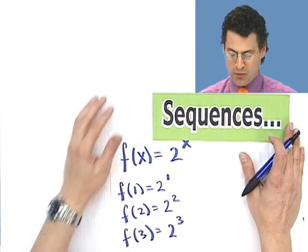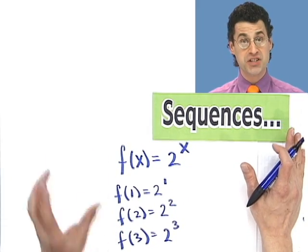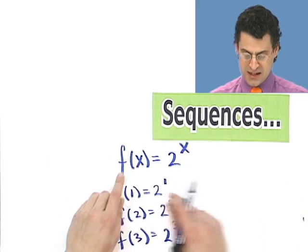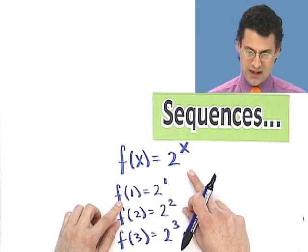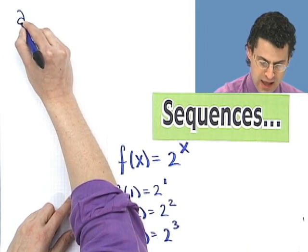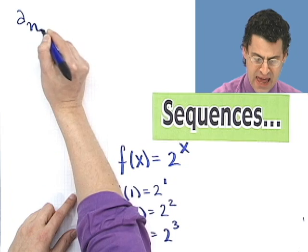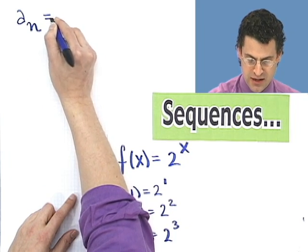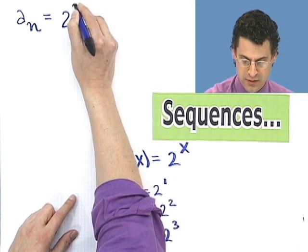So these are really sequences. And a sequence is just a function where I'm just going to plug in natural numbers. Instead of writing it like this, I can write it like this. a sub n, this is new notation, equals 2 to the n.